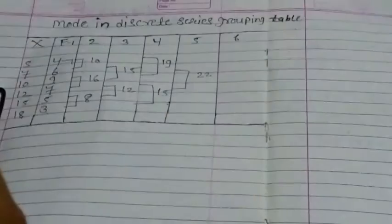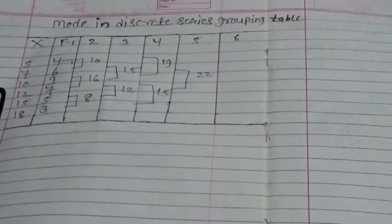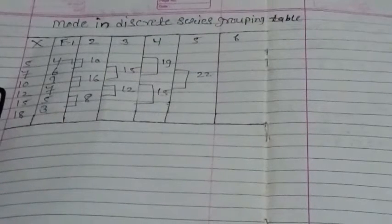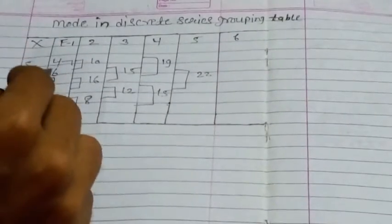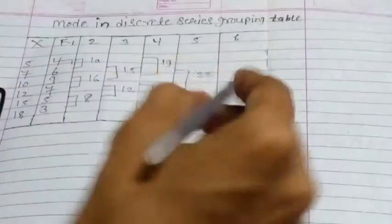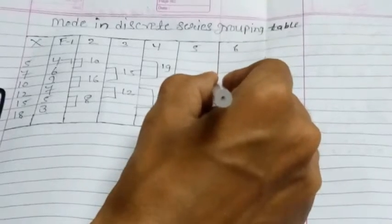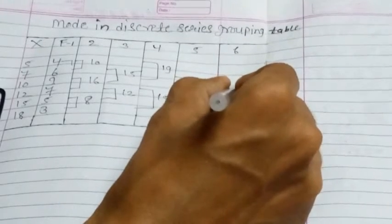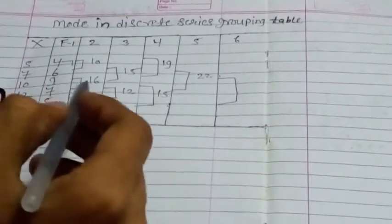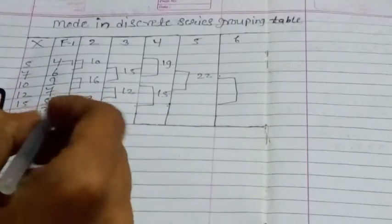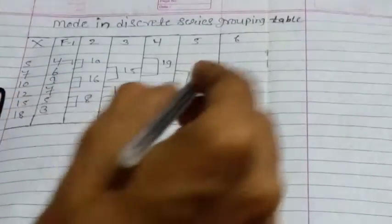In the 6th column, leave the first 2 figures and add 3 figures. Leave 4 and 6, then add 9, 7, and 5. So 9 and 7 gives 16, and 16 and 5 gives 21.